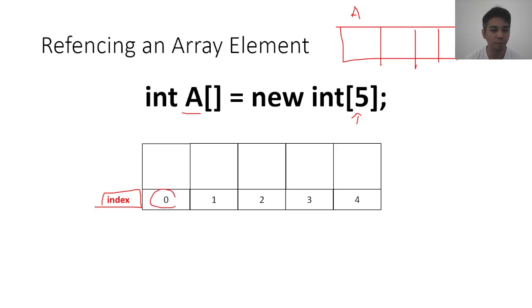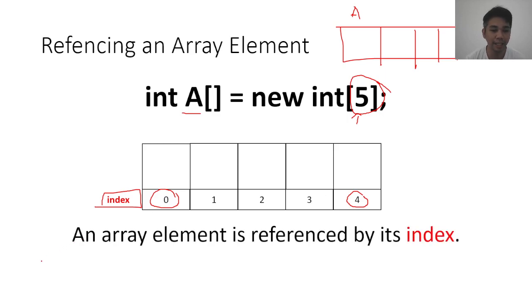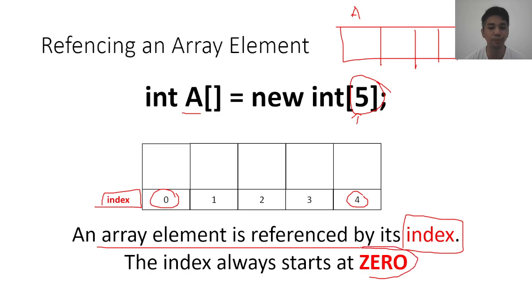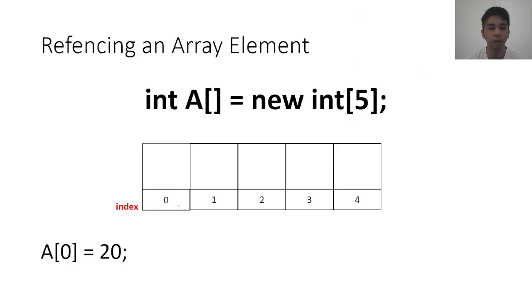And these five different spaces, to reference them, we will be using what we call the index. Now look at how the index was written. It starts at zero, and it ends at four. So if we have a declared length in our array, the first element will start at index zero, and it will end at index length minus one. It's always like that. The last element in an array will always be length minus one. Now an array is always referenced by its index, and it always starts at zero. So all arrays always start at zero. Remember that.